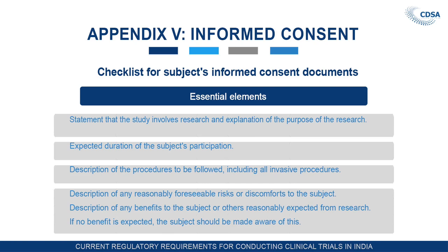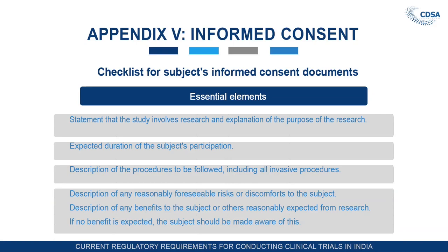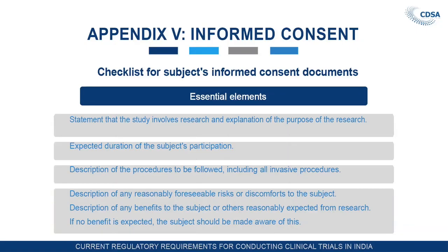The essential elements include: the expected duration of the subject's participation — for example one week or one month — must be disclosed. Then a description of the procedures to be followed including all invasive procedures, such as parenteral injections, tablets, or blood sampling procedures, must be mentioned. A description of any reasonably foreseeable risk or discomfort to the subject must be described if any risk exists. Description of any benefit to the subject or others reasonably expected from research must also be given; if no benefit is expected, the subject should be made aware of this.